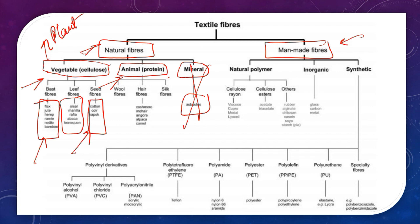Animal protein-based fiber, depending upon the source of that protein, is further classified. It may be wool fiber — for example, the hair of sheep. Then hair fibers, and then silk fibers. All of these are protein-based fibers. If it is a protein-based fiber, its monomer is amino acid. For vegetable fiber — cellulose-based fiber — its monomer may be glucose.